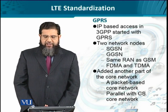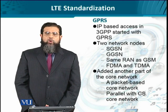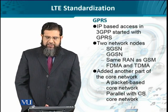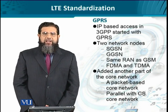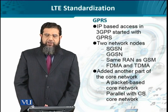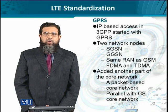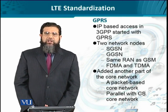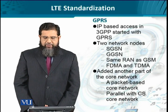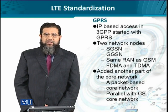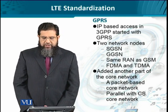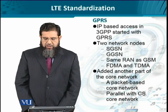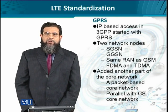Looking at how data rates improved over time, the first technology is the General Packet Radio Service (GPRS). GPRS was offered as an overlay on the GSM network by incorporating two additional nodes into the GSM network architecture: the Serving GPRS Support Node (SGSN) and the Gateway GPRS Support Node (GGSN). These two nodes were specifically meant to provide internet connectivity and served as the entry and exit points to the IP network.